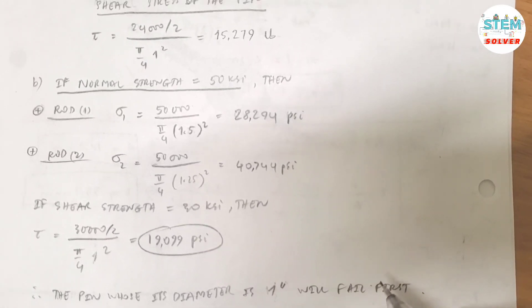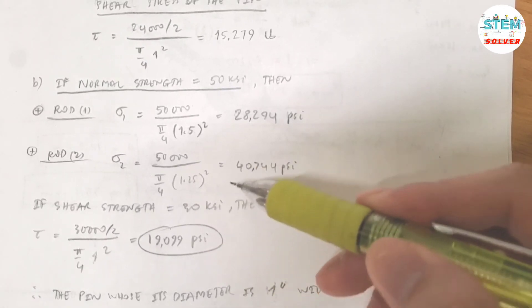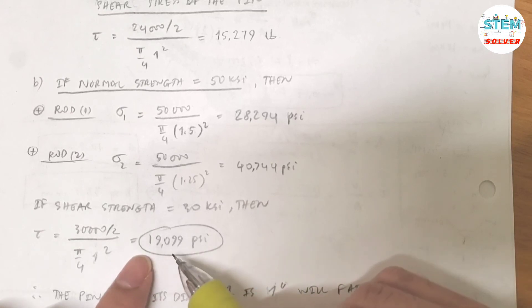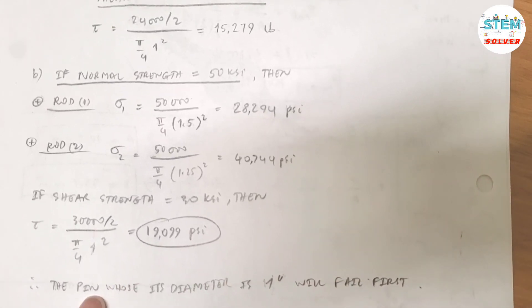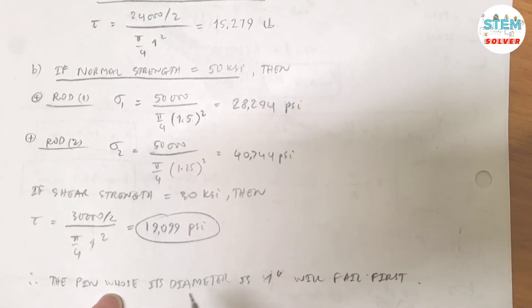So for the conclusion, because the shear stress is less than both of the normal stresses, the pin whose diameter is 1 inch will fail first. Okay, that's it.